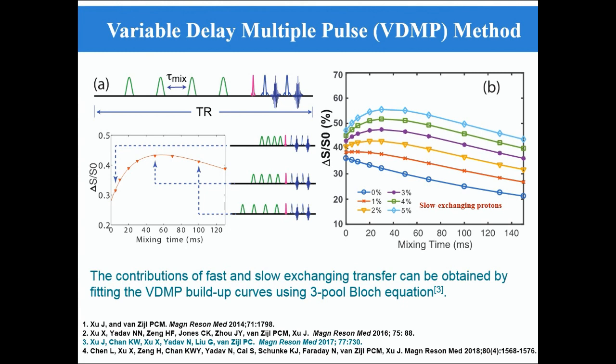The contribution of fast and slow exchange transfers can be obtained by fitting the VDMP build-up curve using three-pool Bloch equations. The details of the Bloch equations are provided in the supplementary materials of the paper published in 2017.